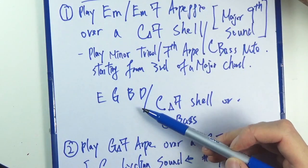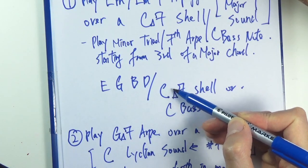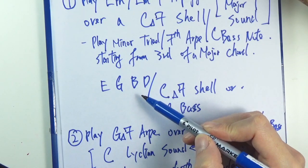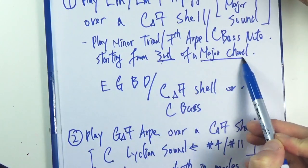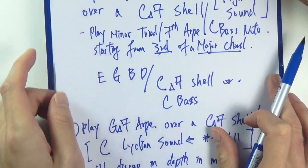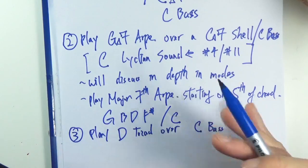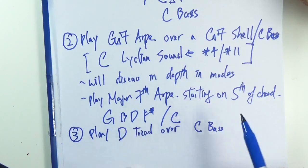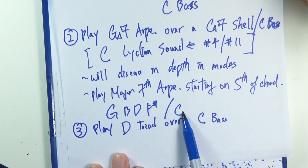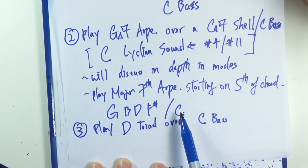For the E minor arpeggio, the formula is: start on the third of the chord — so from C, play a minor triad or a minor seventh chord. The formula is: start from the third of the major chord, play minor or minor seventh. For the second example, start on the fifth of the chord and play a major seven chord. So from C, go up a fifth to G, play major seven, and that yields a C Lydian sound.